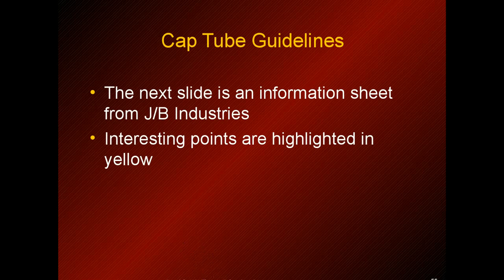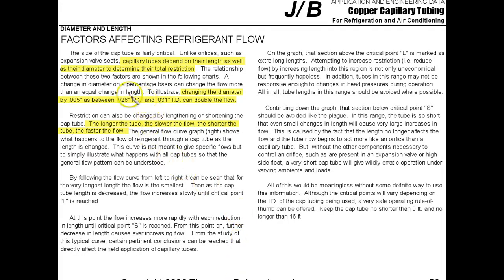Here is some information from JB Industries, who manufacture cap tubes. The cap tubes depend on their length as well as their diameter to determine the total pressure drop or restriction. If you have a change in diameter and put the wrong cap tube in — even by less than 5,000ths of an inch — it is going to double the flow of the refrigerant. So the longer the tube, the slower the flow; the shorter the tube, the faster the flow of the refrigerant.